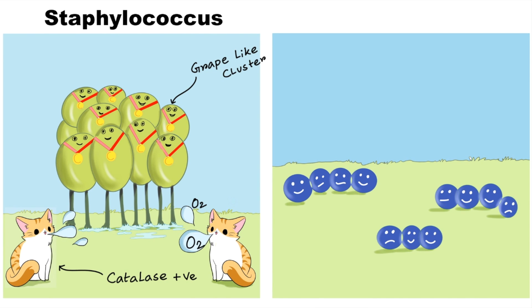You can also see the gold necklace around the necks. Aureus means gold. Staphylococcus aureus can be differentiated from other beta-hemolytic cocci by their elaboration of a golden pigment when cultured on sheep blood agar.